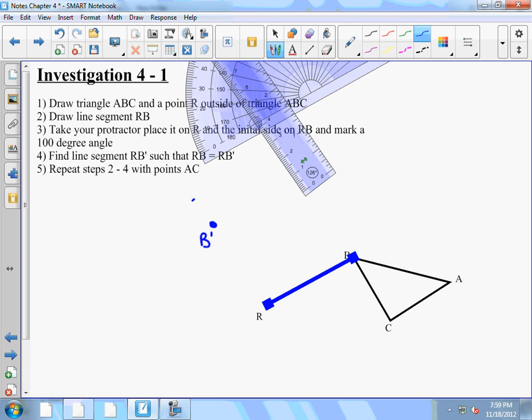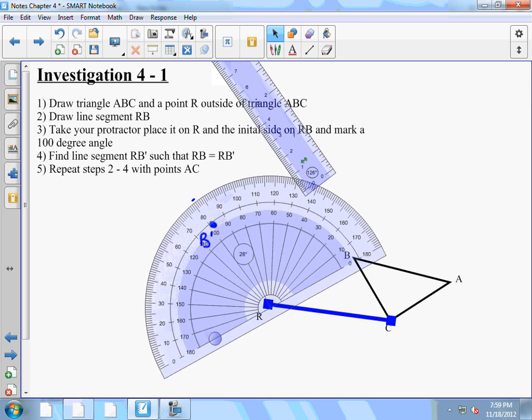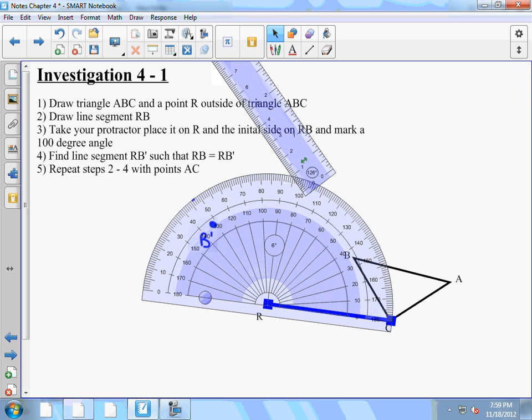Now we're going to have to repeat steps two through four with points A and C. So again, I'm going to draw a line segment from R to C. I'm going to take my protractor, center it on R, match it up, and then mark off where 100 degrees would go, right about here.